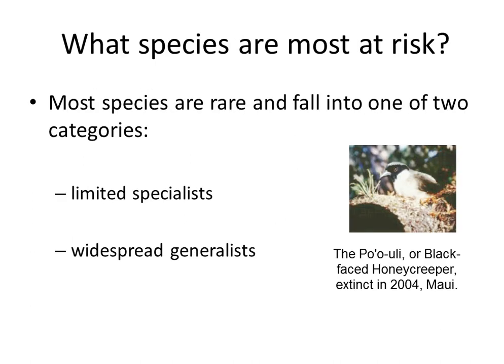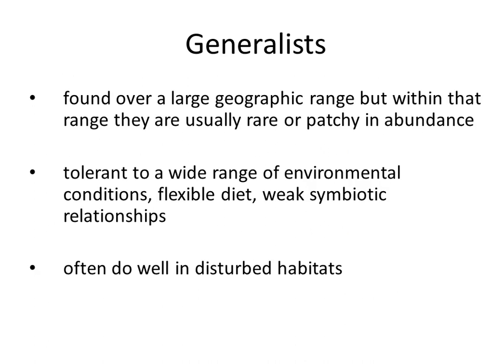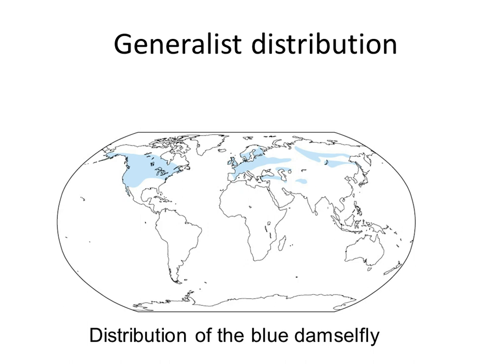Species that are most at risk are limited specialists and widespread generalists. Generalists are found over a large geographic range, but within that range they are usually rare or patchy in abundance. They are tolerant to a wide range of environmental conditions, have a flexible diet, weak symbiotic relationships, and they often do well in disturbed habitats. An example would be the blue damselfly, which is found in many areas across the globe.